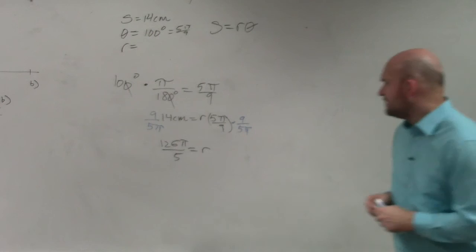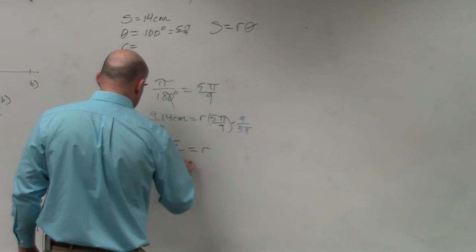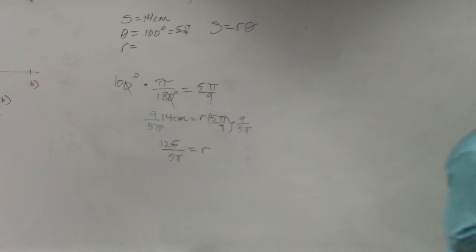So in this example, oh wait, pi's on the bottom. So in this case, I have 126 divided by 5 pi, and that's it. Unless I was asking you guys to simplify your answer or round, that would be fine.